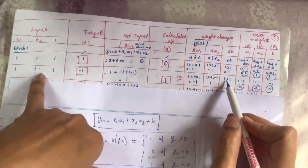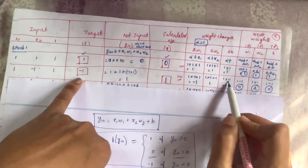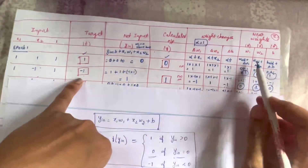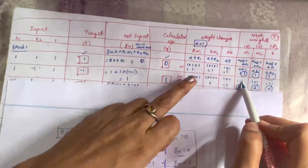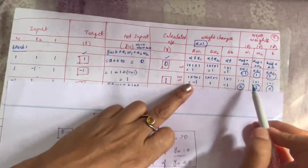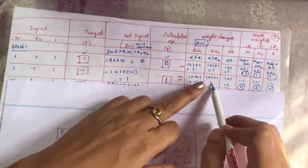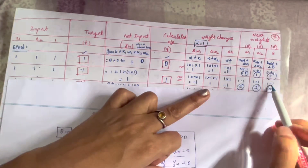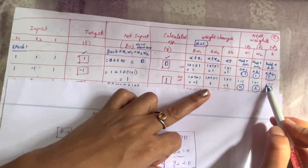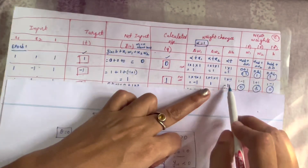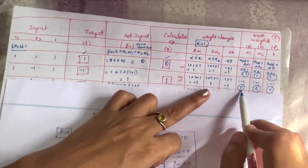Continuing the second input set: del_b = alpha * t = 1 * (-1) = -1. New weights: w1 = 1 + (-1) = 0, w2 = 1 + 1 = 2, b = 1 + (-1) = 0. So the new weight set after the second input is w1=0, w2=2, b=0.